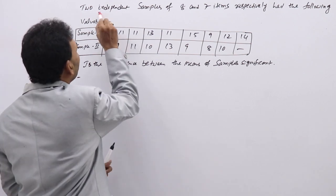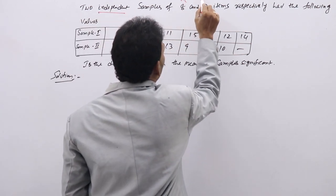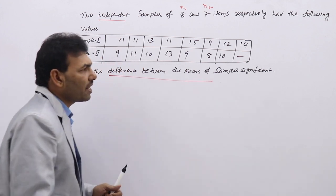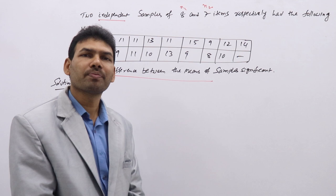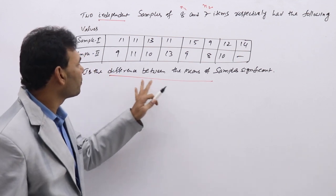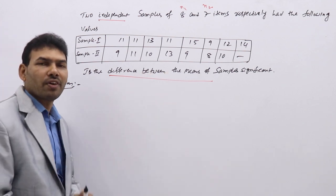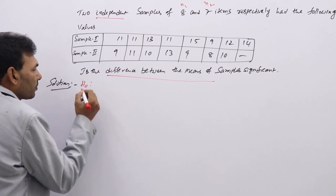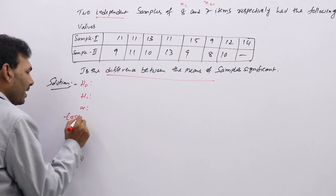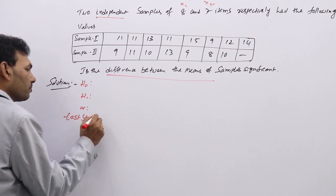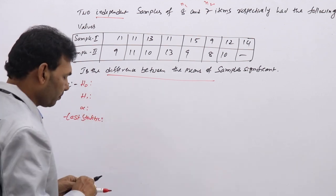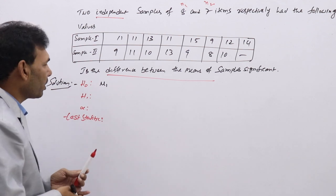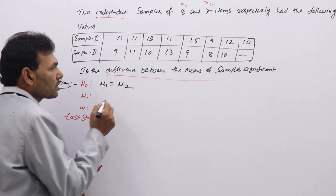Example 1: Two independent samples of sizes 8 and 7 respectively — is the difference between the means of the samples significant? Since sample sizes are less than 30, we use the small sample T-test for difference of means. We write H0 and H1. H0 for difference of means: both means are equal.